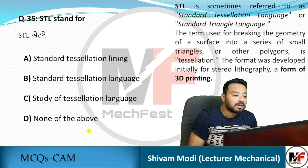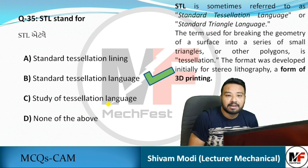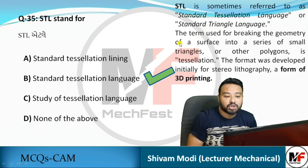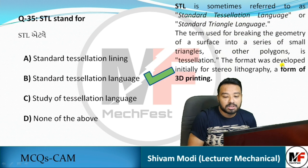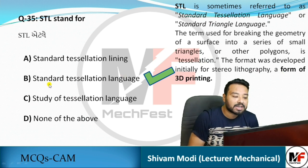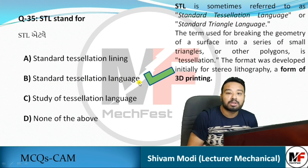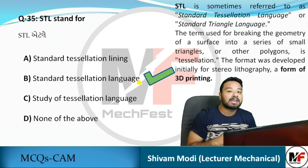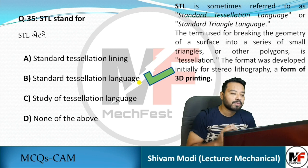STL stands for Standard Tessellation Language. STL is sometimes referred to as Standard Tessellation Language or Standard Triangle Language. Tessellation is the term used for breaking the geometry of a surface into a series of small triangles or other polygons. The format was developed initially for stereolithography, a form of 3D printing. Any object is divided into small triangles and polygons — this process is called tessellation — and is then generated in language form to create 3D printing.